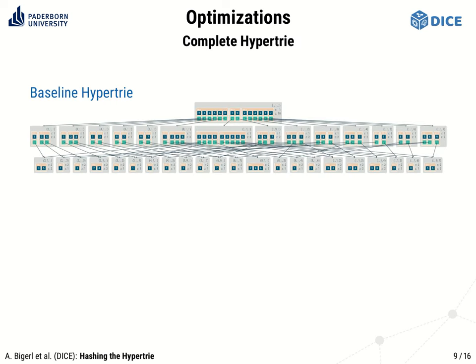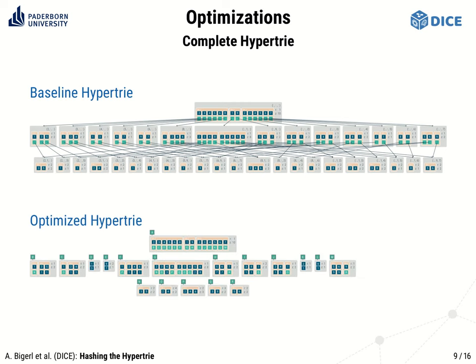Before we go through the empirical evaluation, let's get a visual impression of how these optimizations shrink the HyperTrie. Here you see the full baseline HyperTrie for the exemplary data. It especially requires many leaf nodes, and there is a fair amount of duplicate and single entry nodes among them. Now looking at the optimized HyperTrie, it is clearly visible that the amount of nodes is drastically reduced — there are fewer inner nodes and much fewer leaf nodes. This is a toy example, of course.